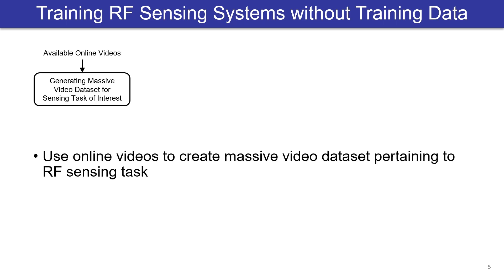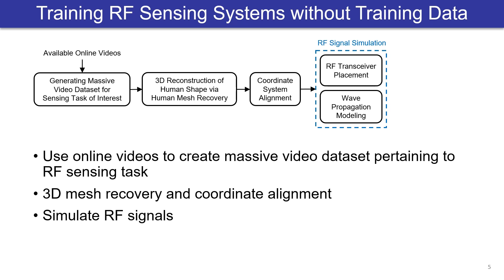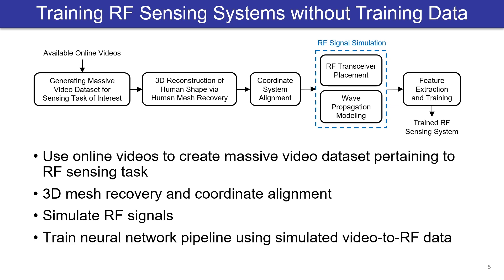Given a video of a person performing an activity, we first extract and align the 3D mesh of the person. Then, based on a given RF setup, we simulate the received RF signal that would have been measured if the person in the video was performing the activity in the RF area. This allows us to generate a large amount of RF training data without collecting any real RF measurements. Such data can then be used to train a machine learning model.